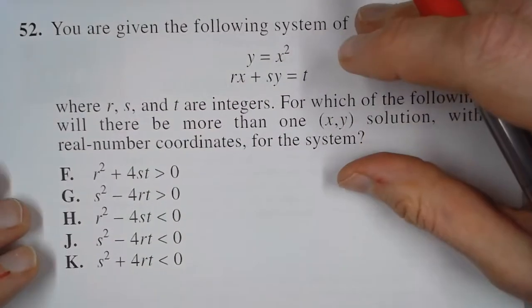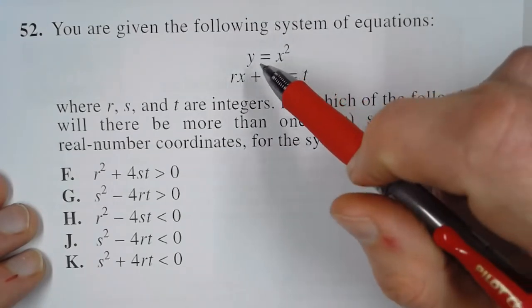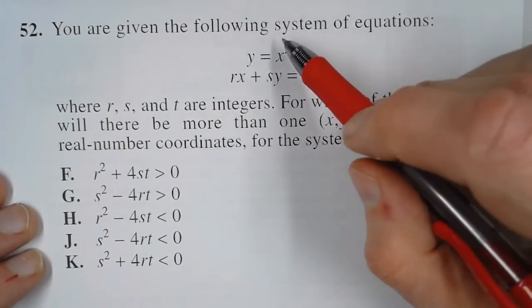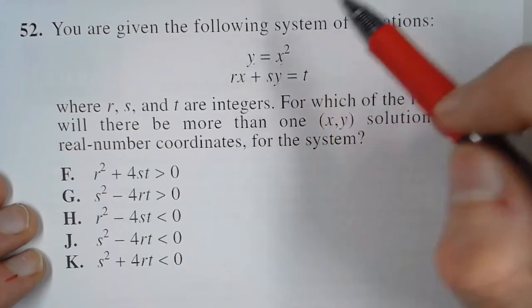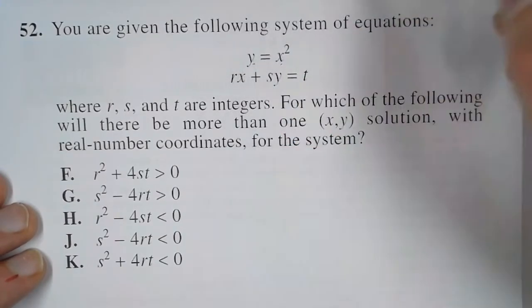Okay, now r, s, and t we can't work with. We don't know what they are, but we can work with x and y because we know that y equals x squared. So what we can do is substitute x squared wherever we see a y.